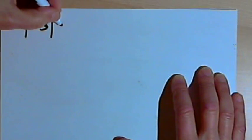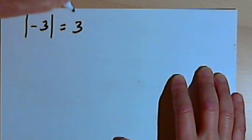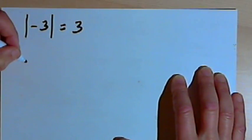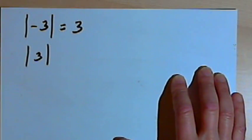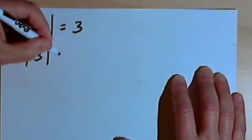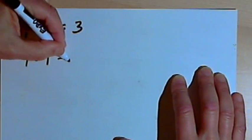So the absolute value of negative 3 is 3. Now if it's positive to begin with, if I just have the absolute value of 3, or positive 3, then that's also going to be 3.